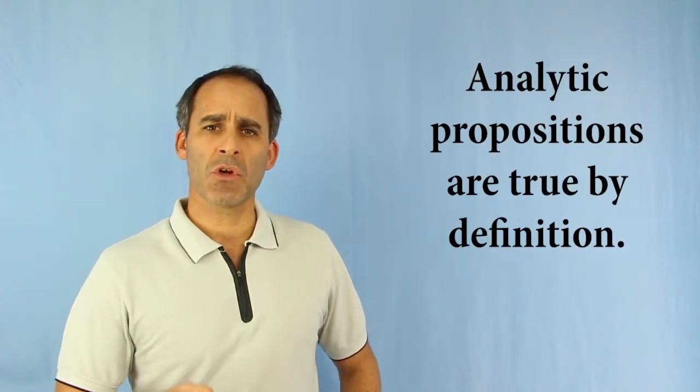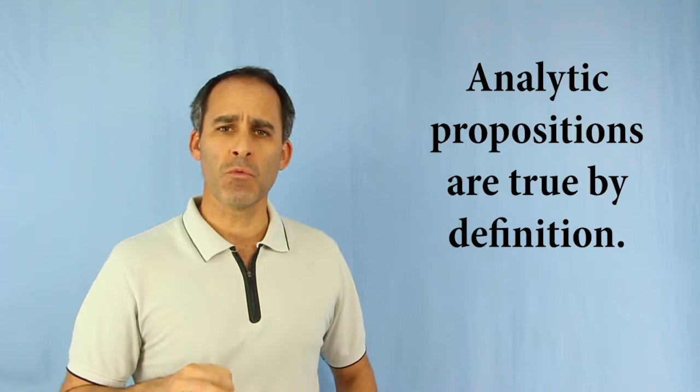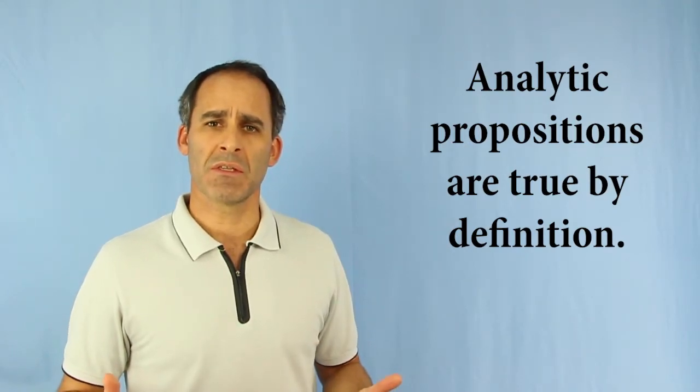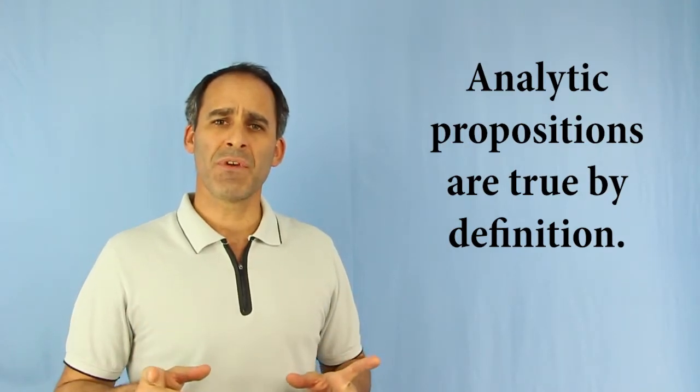The first type of sentence we'll look at is called an analytic proposition. Proposition is the word that we're going to call for a declarative sentence. Analytic propositions are absolutely true because of the nature of the sentence themselves. Analytic definitions are true by nature.